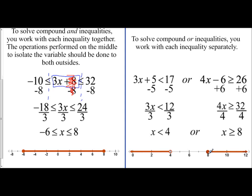But for an or, it's very simple. You just work with them separately. For an and, you focus on the middle. However, you would isolate the variable you need to do to both of the outsides. So I hope this introduction to the two different types of compound inequalities allows you to approach this solving aspect in the next videos a little bit easier.